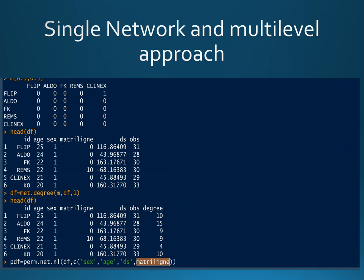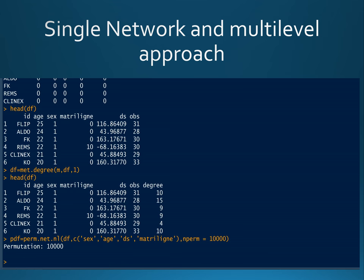As you will see, thanks to C++ code, this type of permutation goes very fast. Once you obtain this permuted object with all your 10,000 permutations, you can do permuted statistical tests.